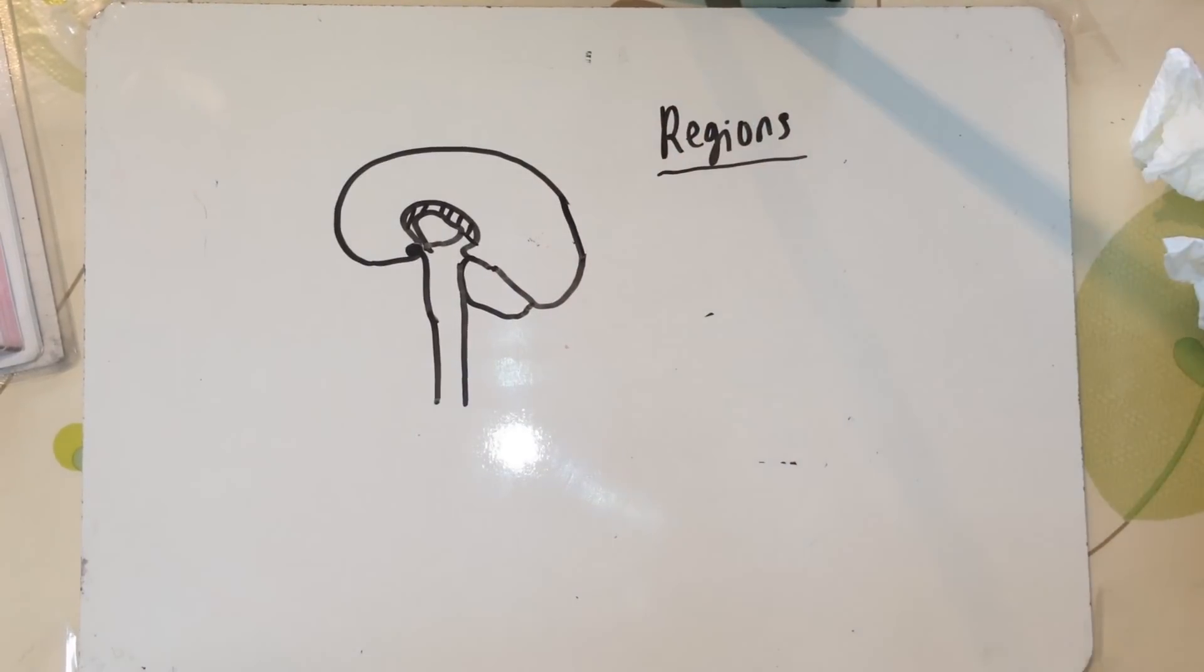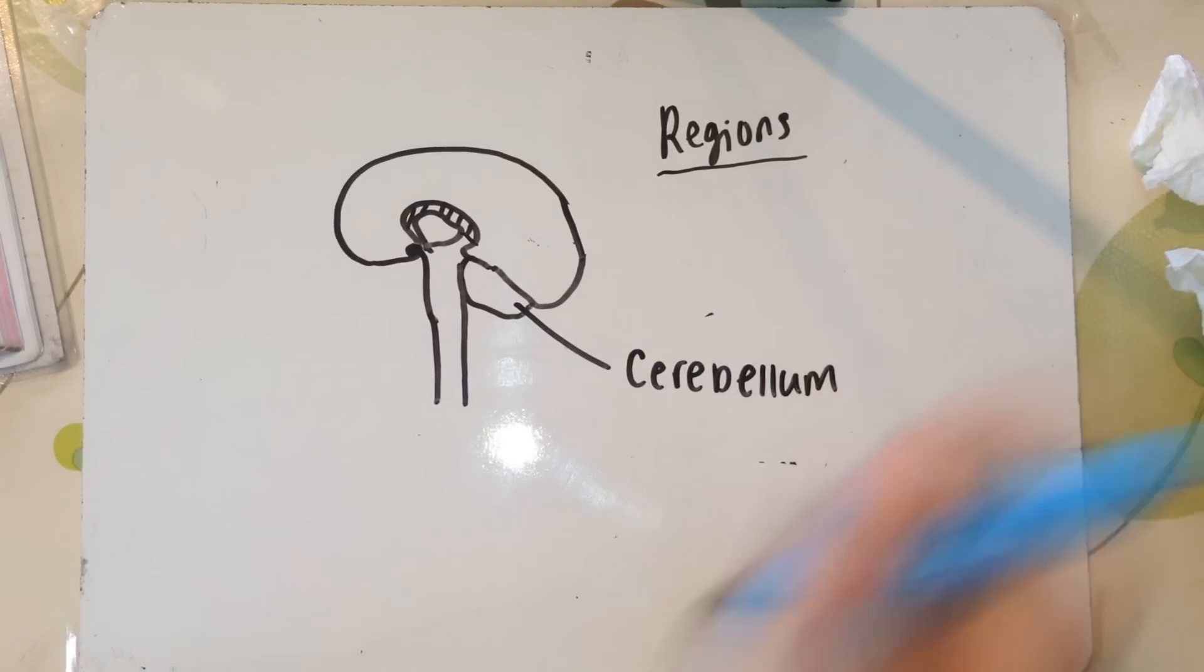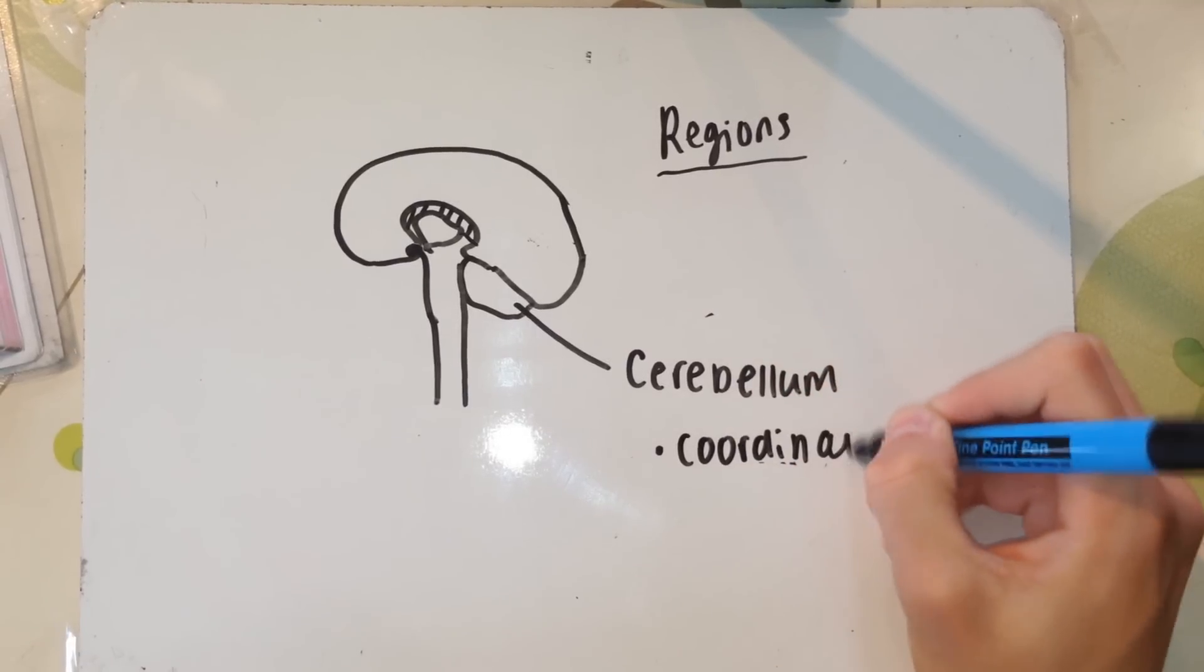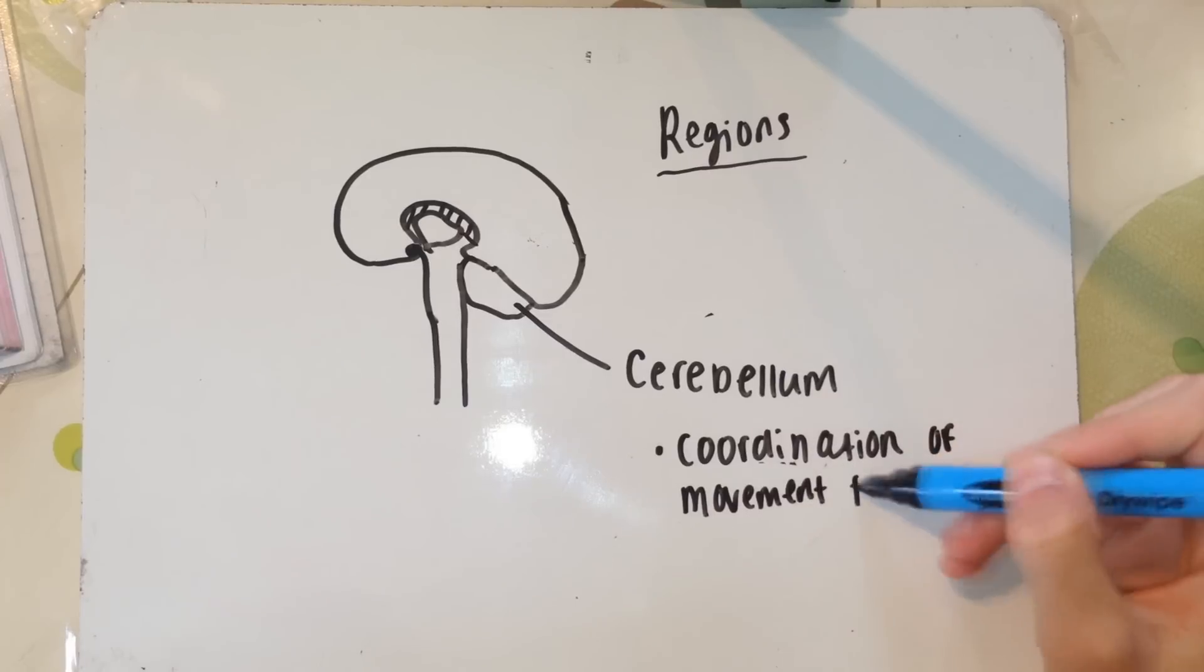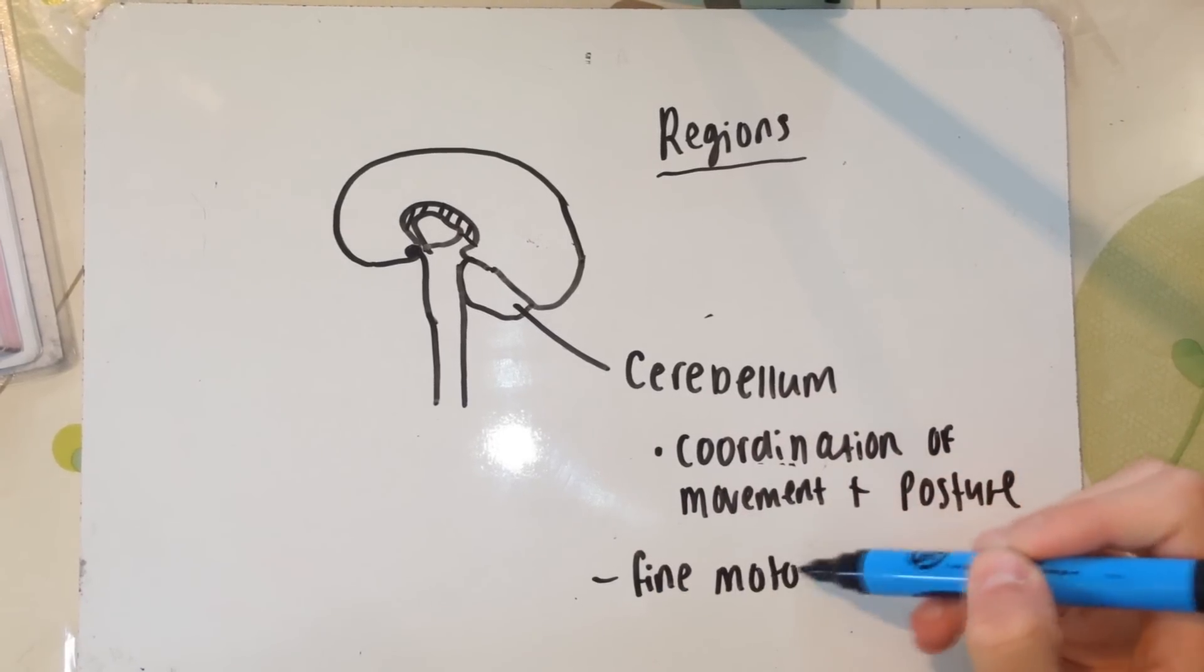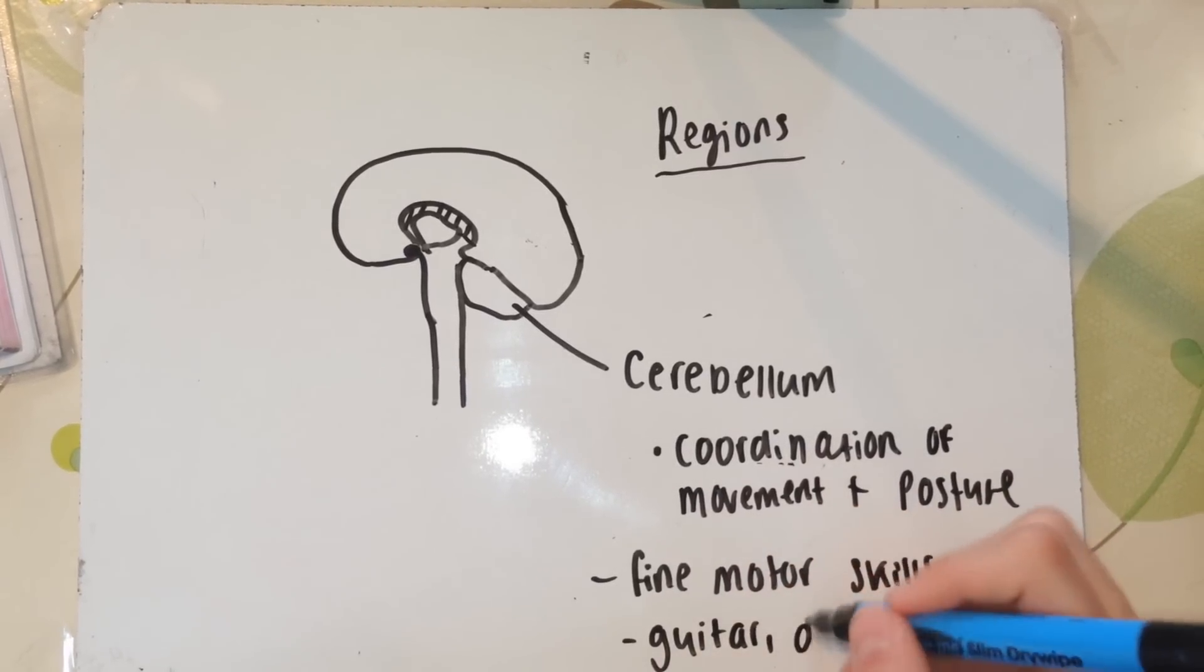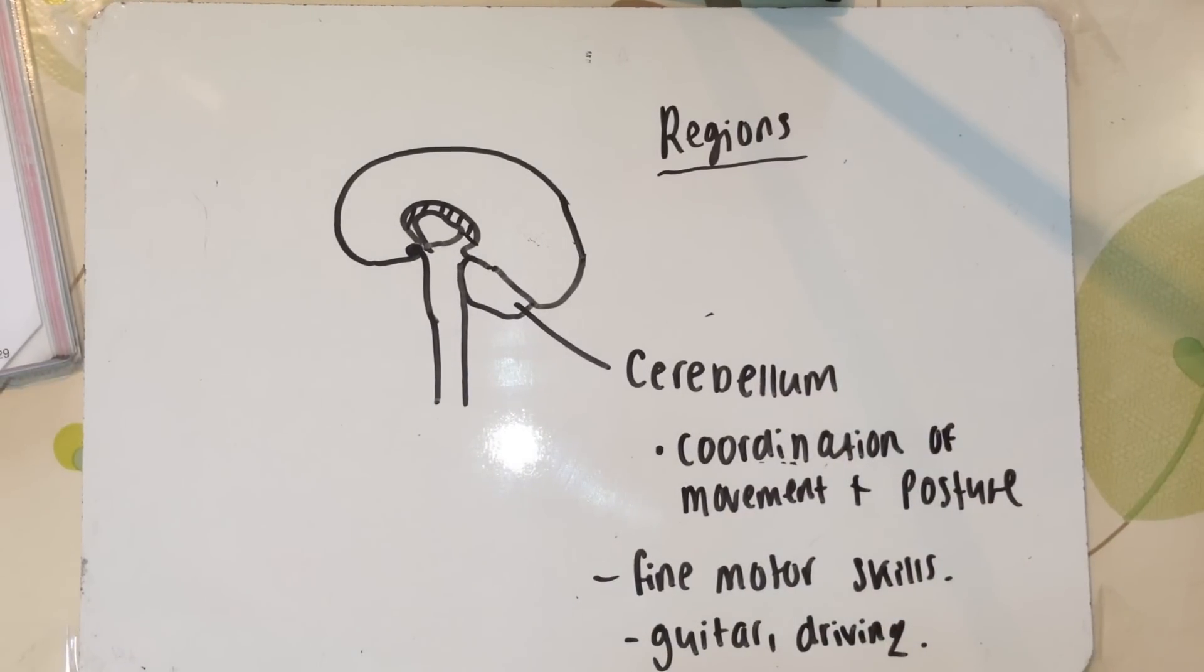So next, at the back there, at the bottom, we have the cerebellum. This basically controls all the coordination of movement, posture, the fine motor skills, like picking the guitar with your fingers, like little picking patterns and things, all the really fine motor muscle movements, driving. It's like a non-conscious operation. After experience, you get used to just being able to move your foot and move the steering wheel with your hands and your muscles without even thinking about it.